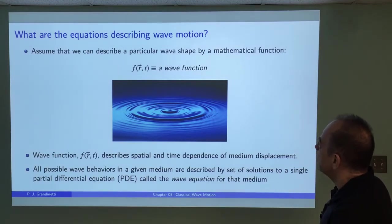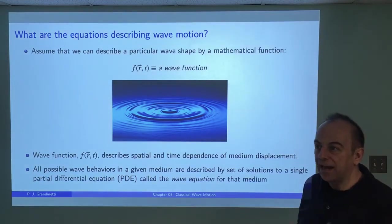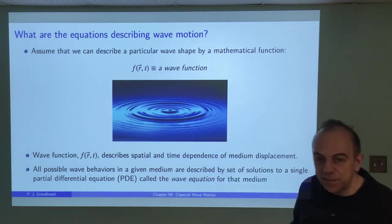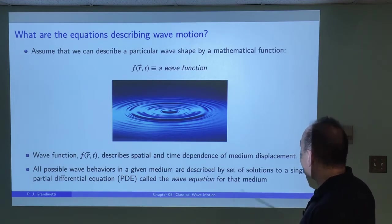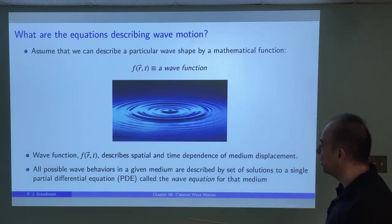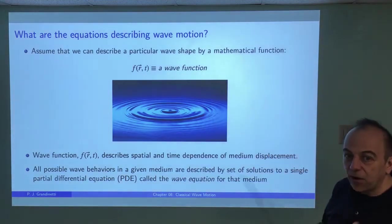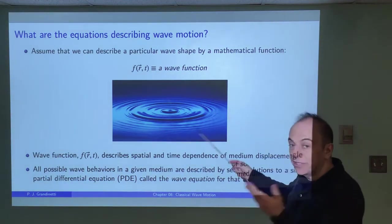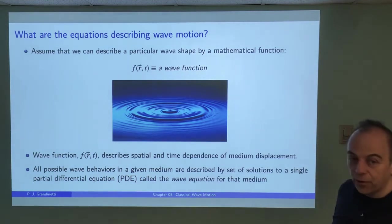If we're going to describe a wave, we need some mathematical function that describes the medium at every point in space and as a function of time — we call this the wave function. It describes the displacement of the medium as a function of position and time. This wave function is a solution to a single partial differential equation called the wave equation for the medium. All the different wave shapes you can have in a medium can be described by multiple different wave functions, but all those wave functions are solutions to one differential equation — the wave equation for that medium.